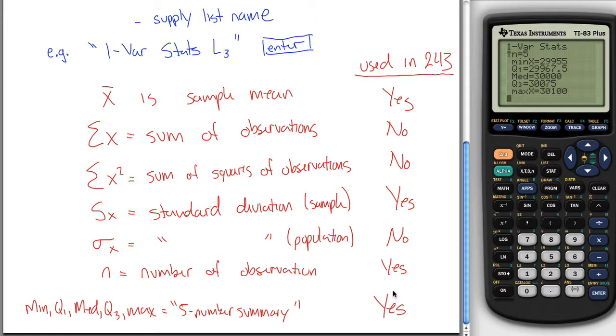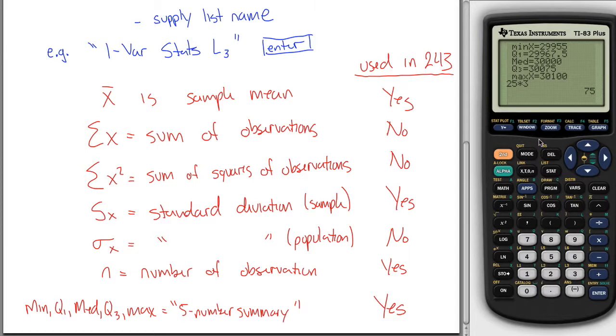You don't have to exit out of this list or anything. You can just start typing on your calculator. If you want to figure out what 25 times 3 was, you can just do it and the calculator will keep working again. That is the end of this tutorial.